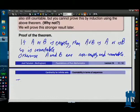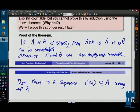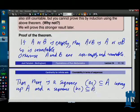So then there is a sequence an in A using up A, so every element of A appears at least once in that sequence, and a sequence bn in B using up B. And so every element of B appears at least once in that sequence.